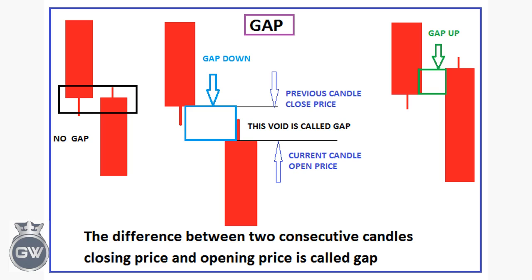So we start with what is a gap. Gaps are defined as the area on a chart where no trading activity has taken place. This appears when an asset's price moves sharply up or down with nothing in between, meaning the market has opened at a different price to its prior close.